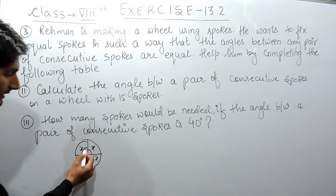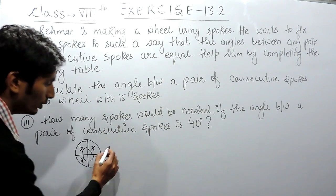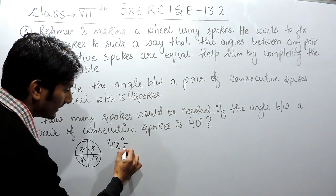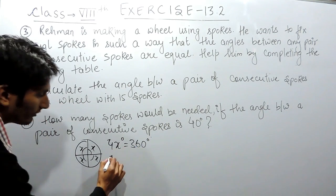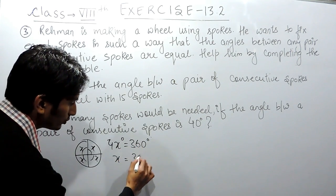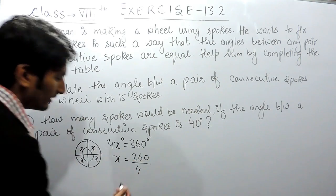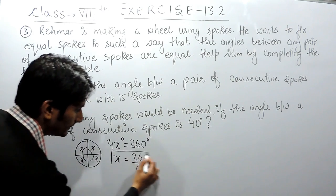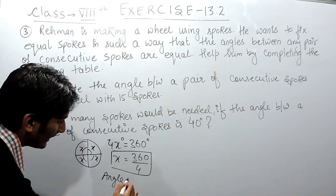So this will be 4X, and clearly this should be equal to 360 degrees. So the value of angle must be equal to 360 degrees upon 4. By this, we can form a formula. If you want to find the angle, what you have to do is divide 360 by n, where n is the number of spokes.